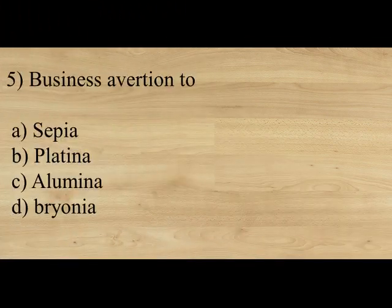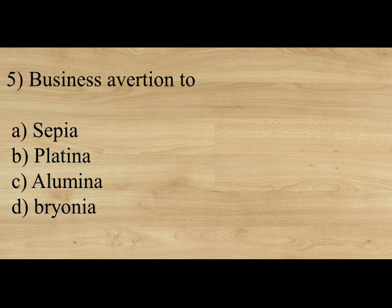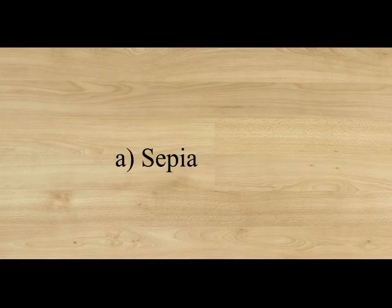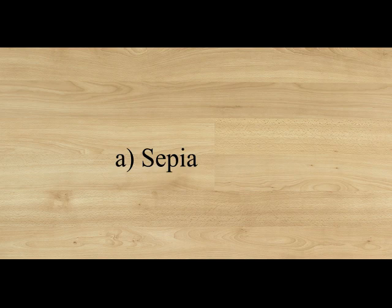Next question: Business aversion to? Option A: Sepia. Option B: Platinum. Option C: Alumina. Option D: Bryonia. Business aversion — the medicine is Option A, Sepia. Aversion to children — the medicine is Platinum. Alumina cannot look at blood — don't forget that. And Bryonia always likes to talk about business.